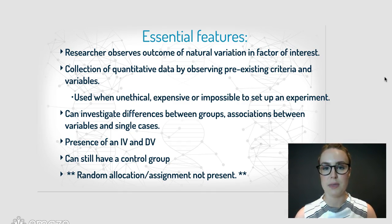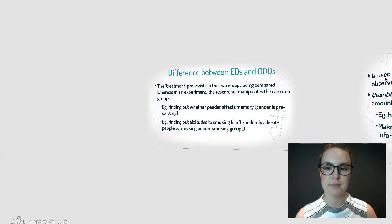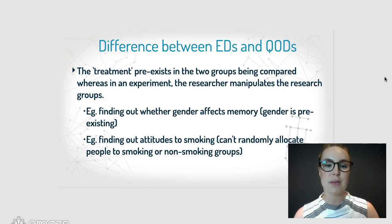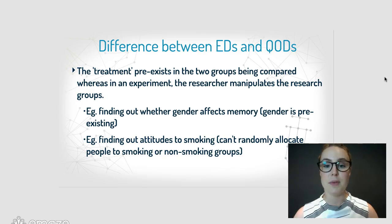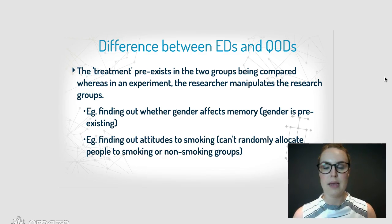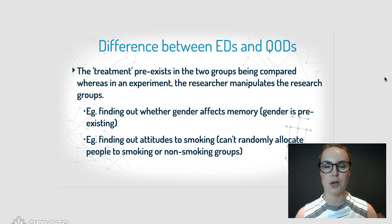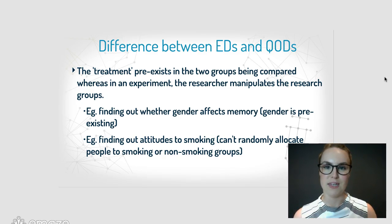A key difference between the experimental design and this quantitative observational design is that the treatment already pre-exists in the two groups. In an experiment, we manipulate those groups to either the experimental or the control group. But in this design, those groups already exist. For example, you could be finding out whether someone's gender affects their memory — gender is pre-existing, you can't randomly assign people to a gender on the day.